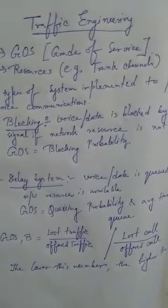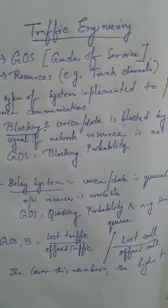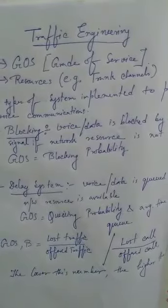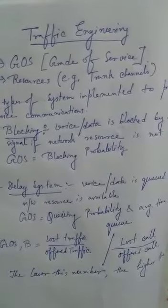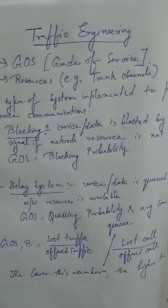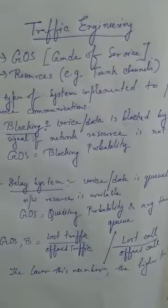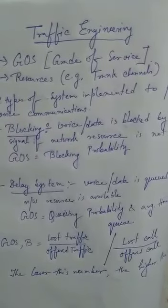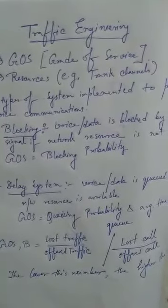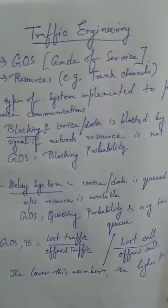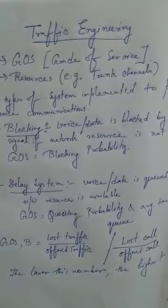Traffic engineering balances the following factors based on a given amount of traffic: grade of service and resources. Two types of systems are implemented to provide voice communications — number one is the blocking system, and number two is the delay system.